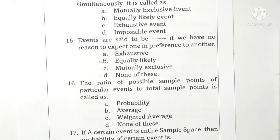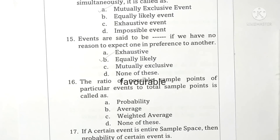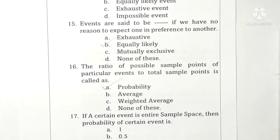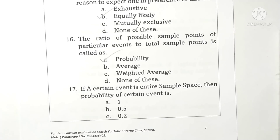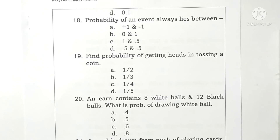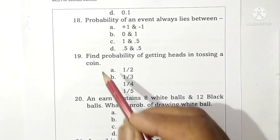Question 16: The ratio of possible sample points of a particular event to total sample points is called probability. Option A is correct. Question 17: If a certain event is the entire sample space, then the probability of a certain event is always 1. Option A is correct. Question 18: Probability of an event always lies between 0 and 1. Option B is correct.